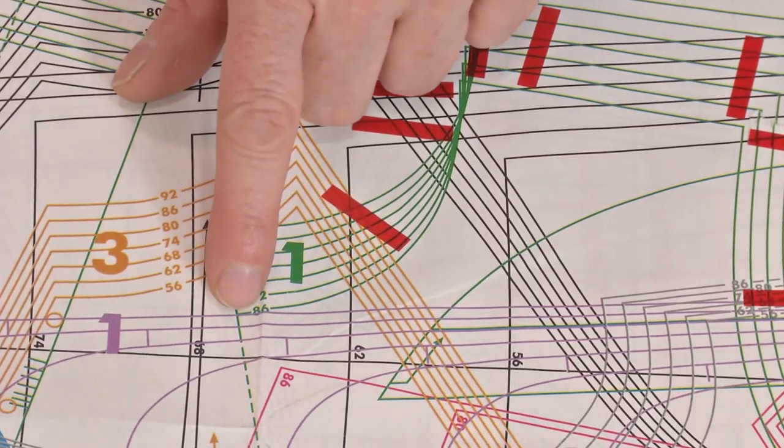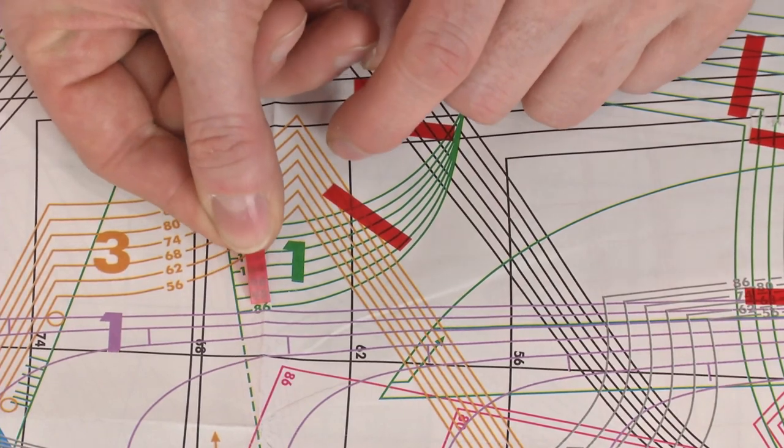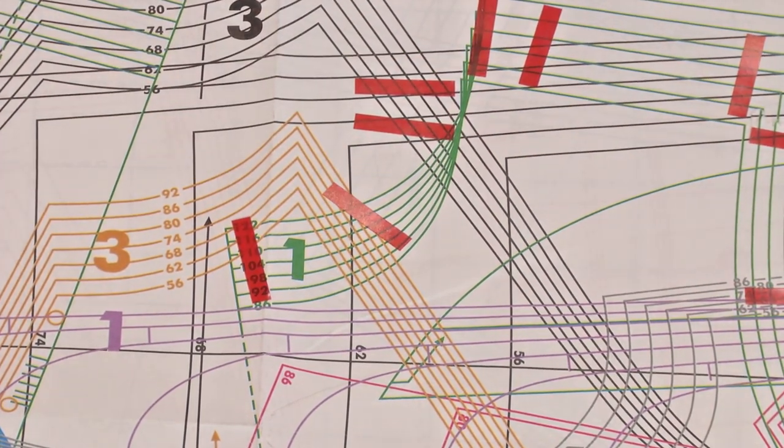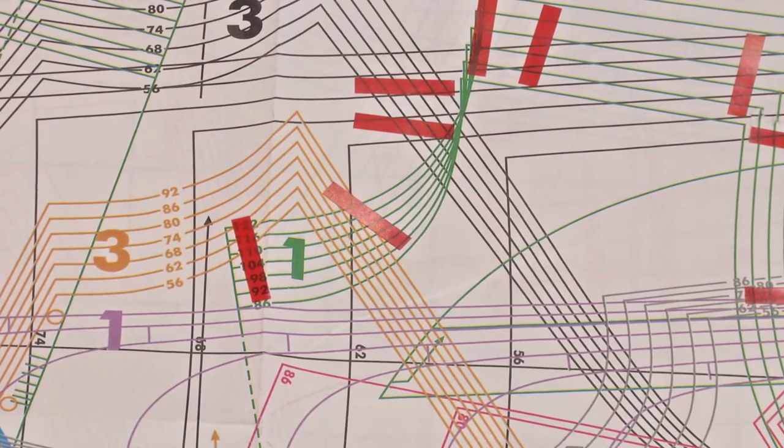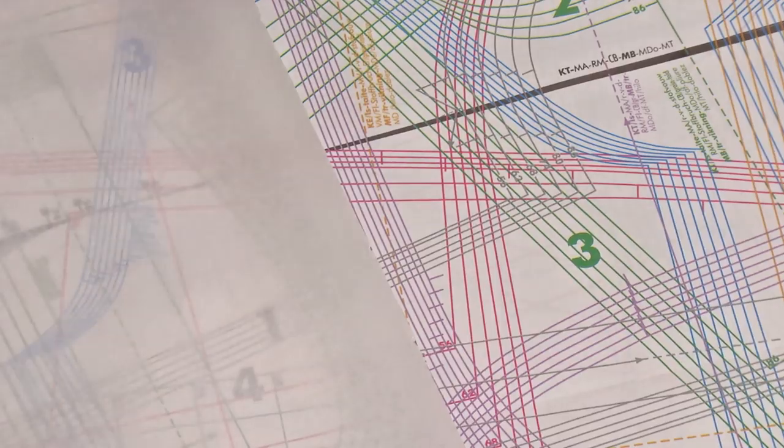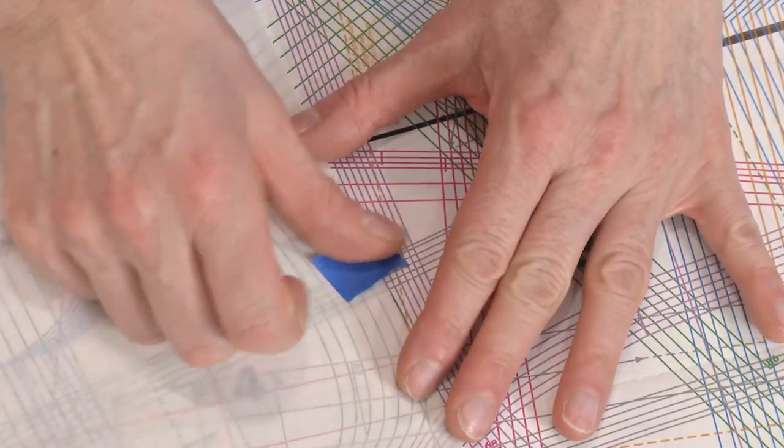Identify the first pattern piece to trace. Arrange and apply sticky file flags around the pattern piece's outline along the desired size line. Cut a large piece of medical exam paper, place it over the pattern sheet, and tape it to the table with painter's tape.